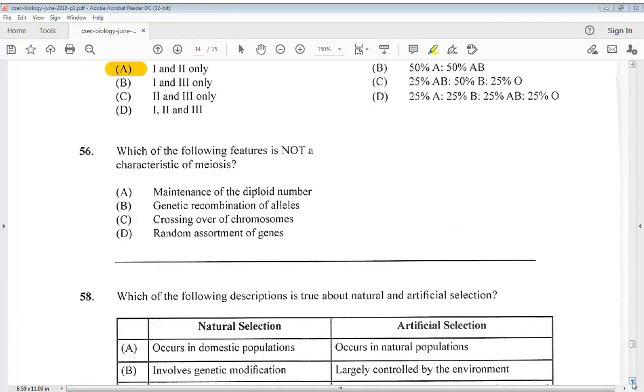Question 56. Which of the following features is not a characteristic of meiosis? A. Maintenance of the diploid number. B. Genetic recombination of alleles. C. Crossing over of chromosomes. Or D. Random assortment of genes. So the answer is A.